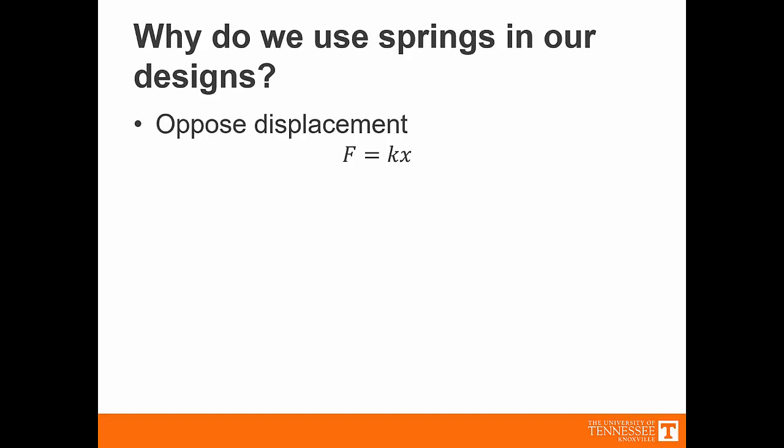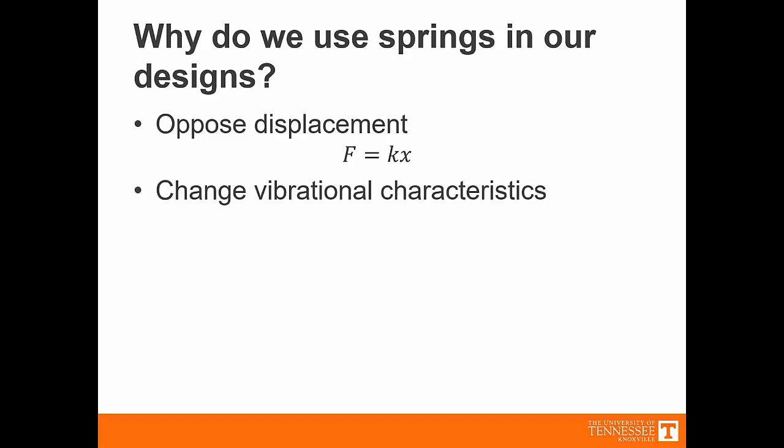In addition to opposing displacement, we also use springs to change the vibrational characteristics of our machines. The standard governing equation for how machines move is mass times acceleration plus damping times velocity plus the springiness of the item, the k value. By adding a spring, you can change that k value and therefore change the way the system responds.